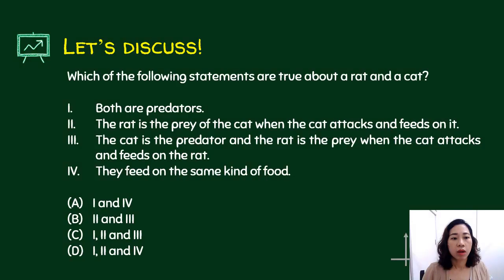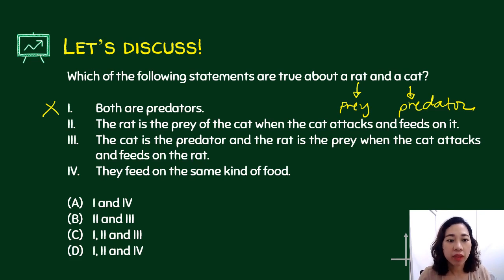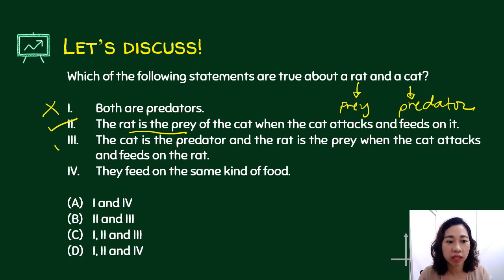Which of the following statements are true about a rat and a cat? One: both are predators — that is not true, because the rat is prey and the cat is the predator. Two: the rat is the prey of the cat when the cat attacks and feeds on it — that is correct. Three: the cat is the predator and the rat is the prey when the cat attacks and feeds on the rat — that is just a rephrasing of statement two. Four: they feed on the same kind of food — of course not. So the answer is letter B.